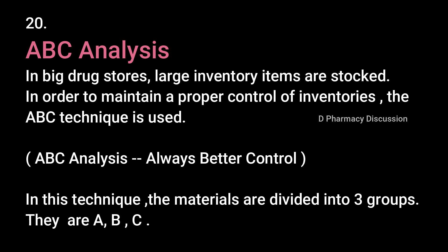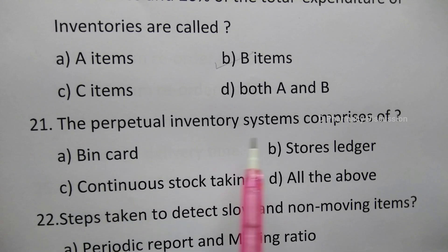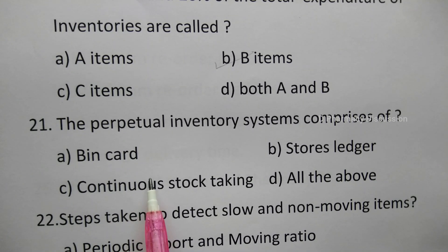In ABC analysis: A items are a few costly items that may not be more than 10% of total items but consume about 70% of the total budget of inventories. B items are neither costly nor cheap. C items are comparatively cheaper in cost, representing 70% of the total quantity of inventories and 10% of the total expenditure of inventories.